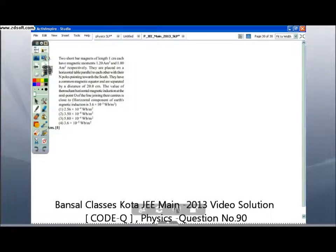This is the last question of the Q set. Two short bar magnets of length 1 centimeter each have magnetic moments 1.2 ampere meter squared and 1.0 ampere meter squared respectively. They are placed on a horizontal table parallel to each other with their north poles pointing towards the south. They have a common magnetic equator and are separated by a distance of 20 centimeter. The value of the resultant horizontal magnetic induction at the midpoint O of the line joining their centers is close to...